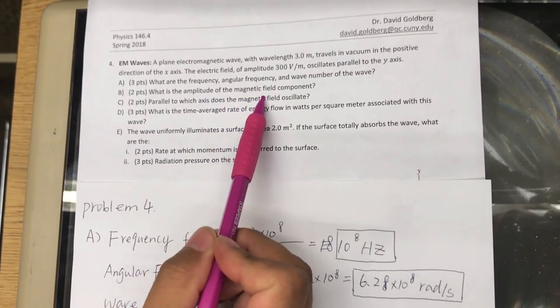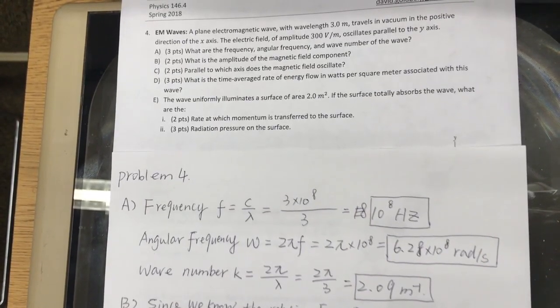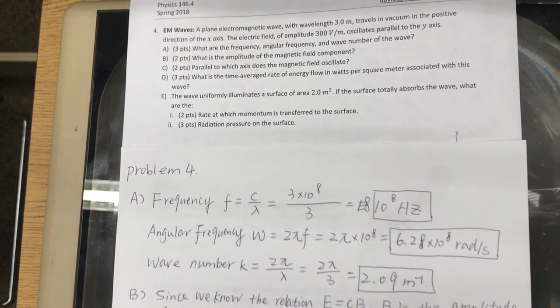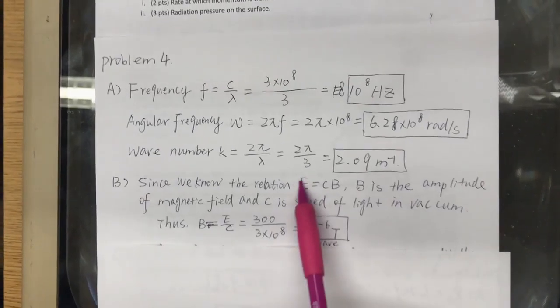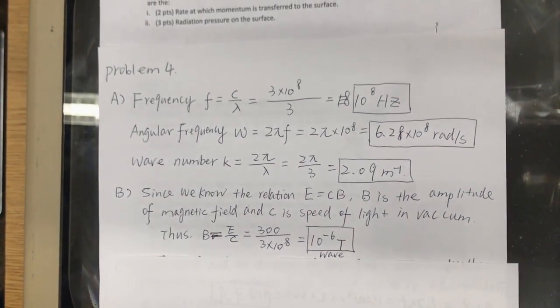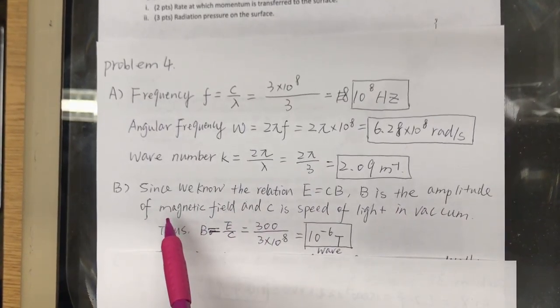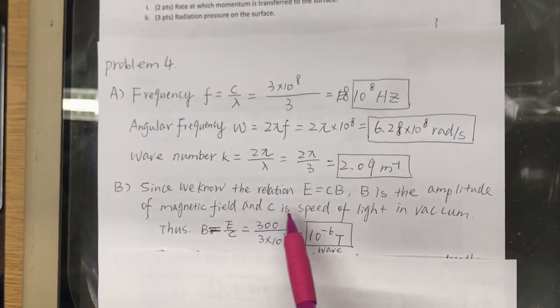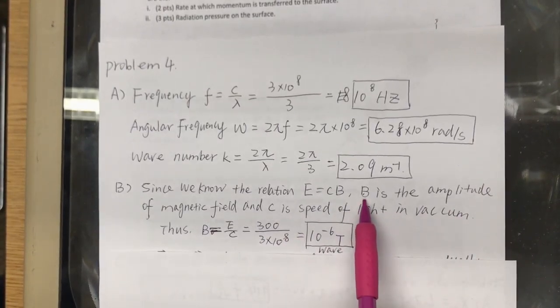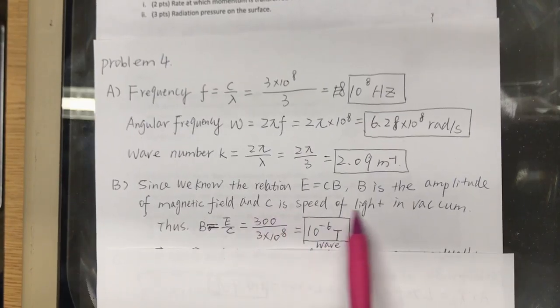What is the amplitude of the magnetic field component? The amplitude, well, since we know the relationship, the electric field equals the speed of light times the magnetic field, the magnetic field is the amplitude of, B is the, has a magnetic field amplitude, and C is the, again, B, the letter B, is the amplitude of the magnetic field, and C is the speed of light in a vacuum.